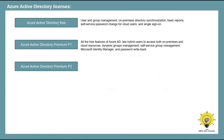With Azure AD Premium P1 license, you get all the free features of Azure AD. In addition, P1 also lets your hybrid users access both on-premise and cloud resources. It also supports advanced administration like dynamic groups, self-service group management, Microsoft Identity Manager, and password writeback that allows users to use self-service password reset for your on-premise users.